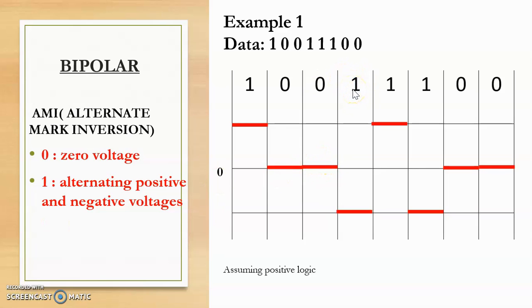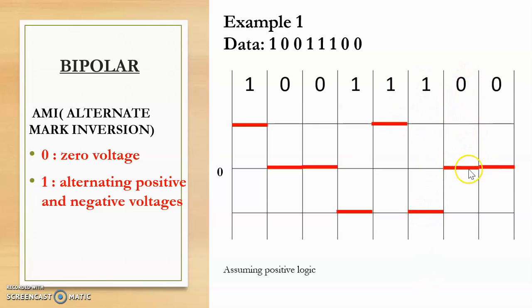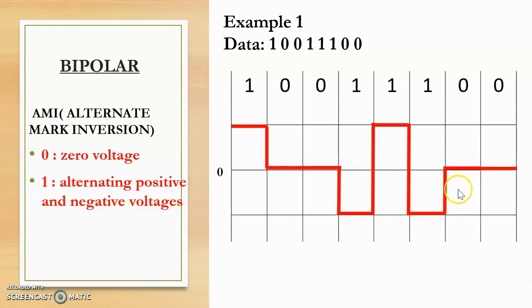The next bit is 1; since the previous 1 value was positive, this 1 value will be negative. Then again we have a 1 — the previous 1 value was negative, so this one will be positive. The next 1 follows, and since the previous 1 was positive, this one will be negative. The next bit is 0 — 0 voltage on the reference line — and then again a 0, also 0 voltage. After connecting the lines, we get the digital signal for data 10011100 using AMI line coding.